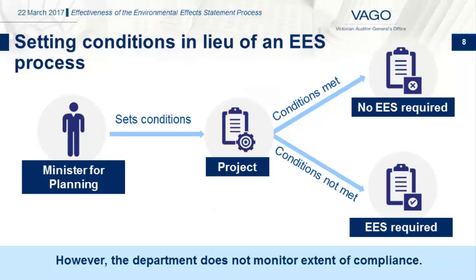The EE Act authorises the Minister to set conditions for a development project in lieu of requiring an EES. If the proponent does not comply with these conditions, the Minister has the legislative authority to ask the proponent to prepare an EES. Although the Department oversees the implementation of conditions set in lieu of an EES, it does not have a comprehensive system for monitoring and reporting on these conditions.